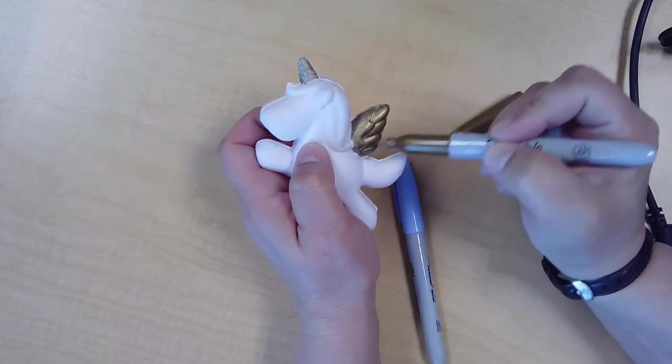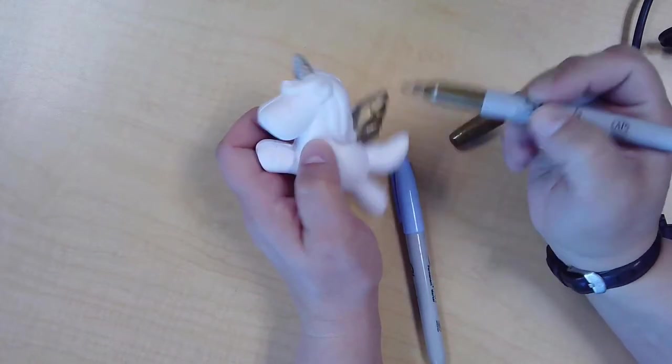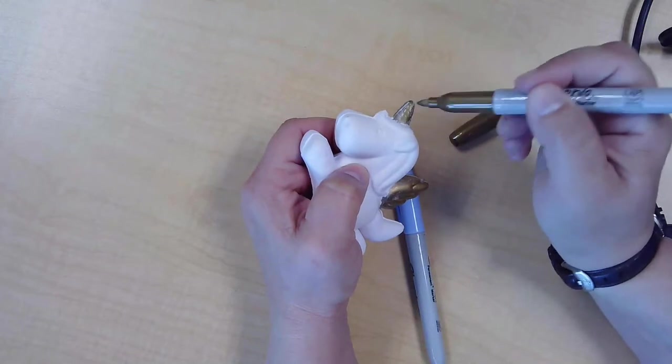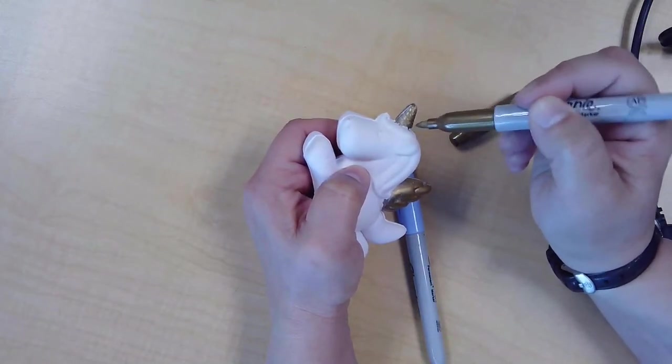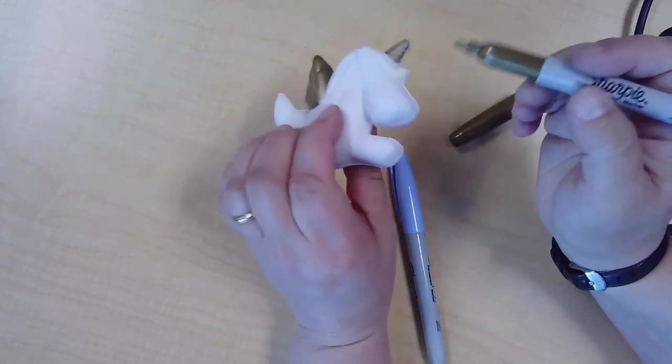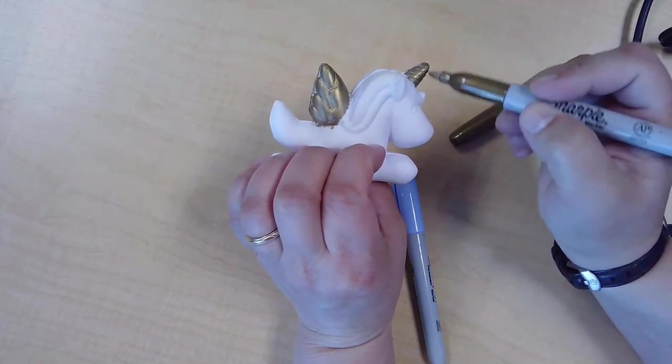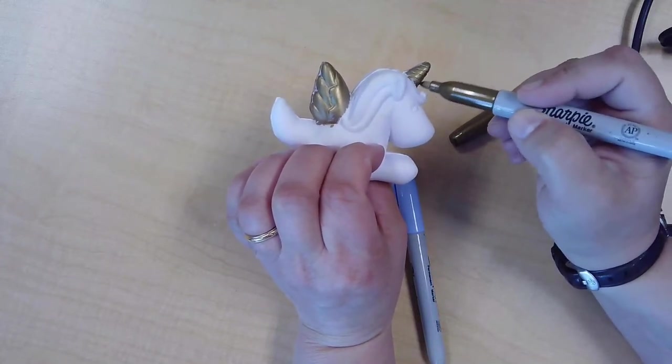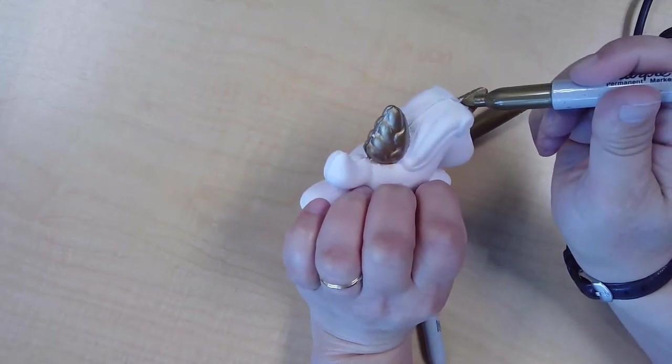You can do whatever design you want—it's your project. I decided I like my unicorns when I think of them, I tend to think of them as white horses, so I'm going to leave most of the body of mine white after I'm done with its horn right here, giving that a little touch up.